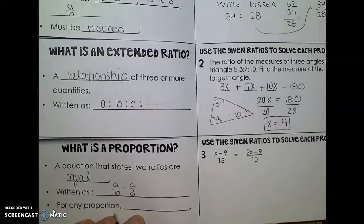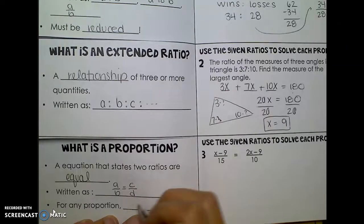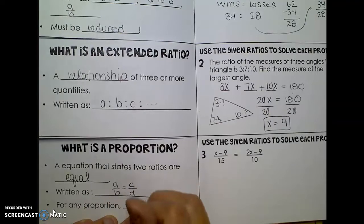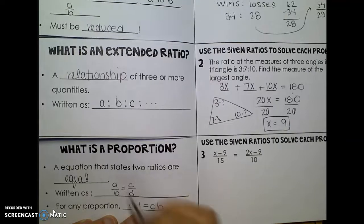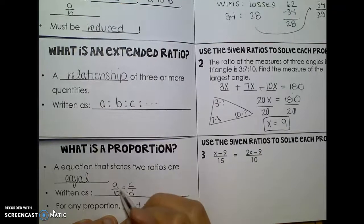And what you can do for any proportion when you have two fractions that are equal to each other, you can always use cross multiplication. So if I did that, I would have A times D is equal to B times C. So I just multiply it across and across.